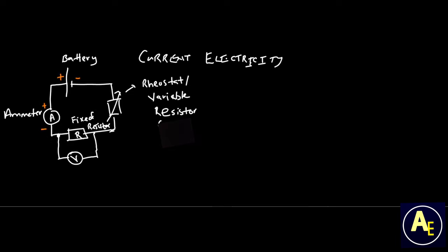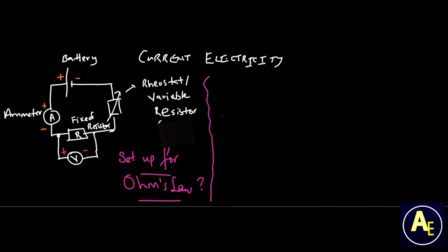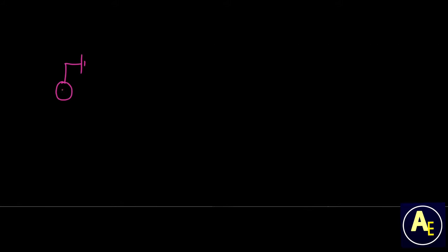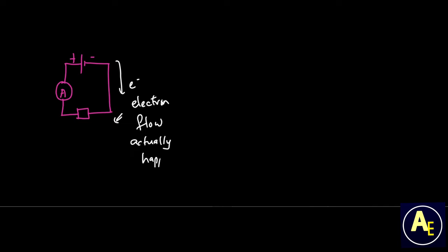And of course lastly we have a voltmeter placed parallel or opposite to a fixed resistor. Please pay attention to the polarities of the battery, ammeter and voltmeter. This setup is actually used for Ohm's Law. Ohm's Law is the direct proportional relationship between voltage and current. In a simple circuit, please note that electrons are the charges that actually flow from the negative to the positive terminal of any battery.